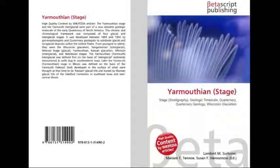From youngest to oldest, they were the Wisconsin Glaciation, Sangamonian Interglacial, Illinoian Stage Glacial, Yarmouthian, Kansan Glaciation, Aftonian Interglacial, and Nebraskan stages. The Yarmouthian Yarmouth Interglacial was defined first on the basis of interglacial sediments encountered in wells dug in southeast Iowa.